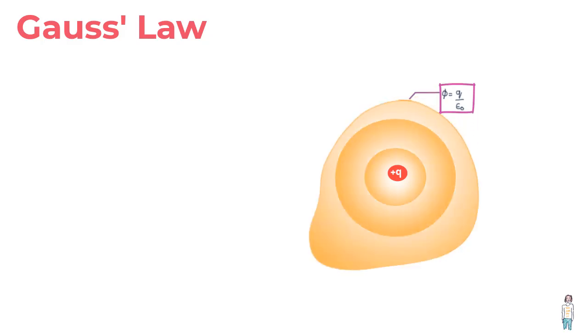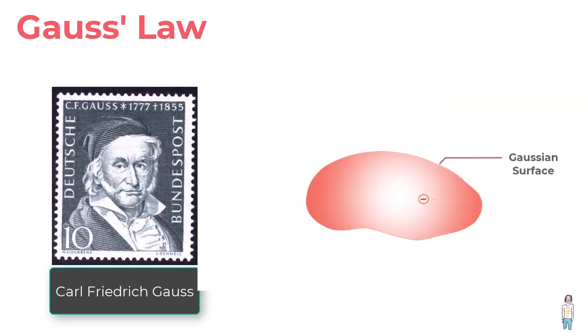So that brings us to the lesson where we actually define Gauss's law, which was formulated by a German mathematician, Karl Friedrich Gauss, one of the greatest ever. And here we'll understand the simplicity and power of his law.